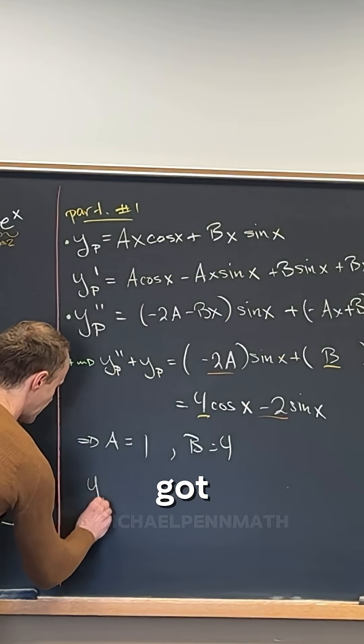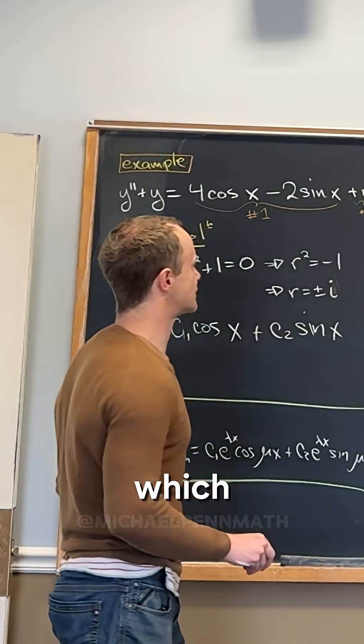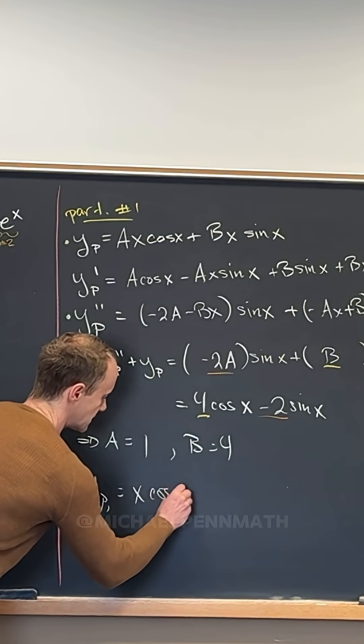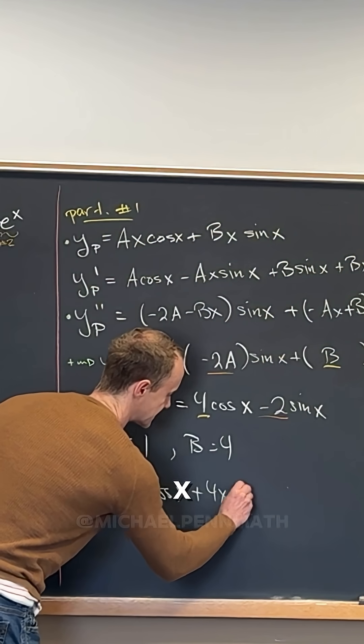So that means we've got our first particular solution, which is what we get if we wrote that down. x cos x plus 4x sine x.